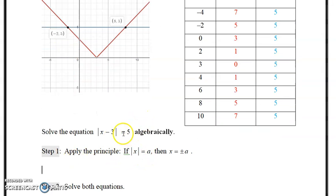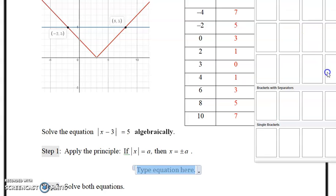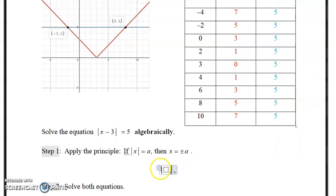Algebraically, what you would do is you would take this. And remember, it's plus and minus the value. So it's going to be plus and minus A. So x minus 3 would be considered the x here, and the A would be considered the 5. So to solve that, you would put the equation in. And so we have |x - 3| = 5. That's the given equation that we have.